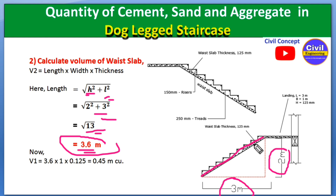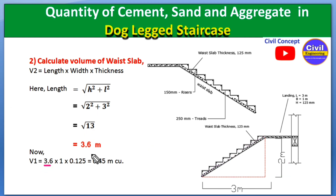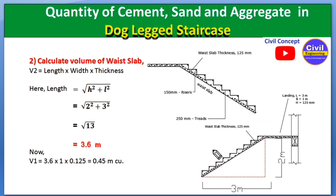Now using the volume formula V = L × B × H: the length is 3.6 m, the width of the stair is 1 m, and the thickness of the waste slab from the 2D plan is 125 mm (0.125 m). Multiplying these values gives 0.45 m³ as the volume of one waste slab.